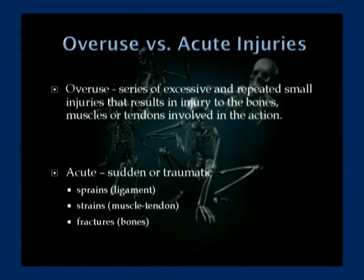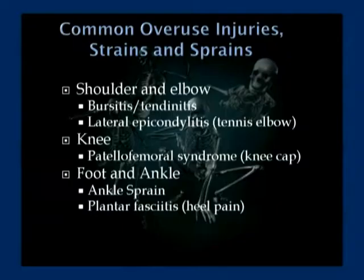For definition purposes: overuse versus acute injuries. Overuse injuries are a series of excessive and repeated small injuries that result in damage to the bones, muscles, or tendons involved in that action. Acute injuries are more sudden or traumatic. Sprains can be partial or full-thickness tears of a ligament. Strains are typically muscle or tendon injuries. And fractures, obviously, are injuries to the bones.